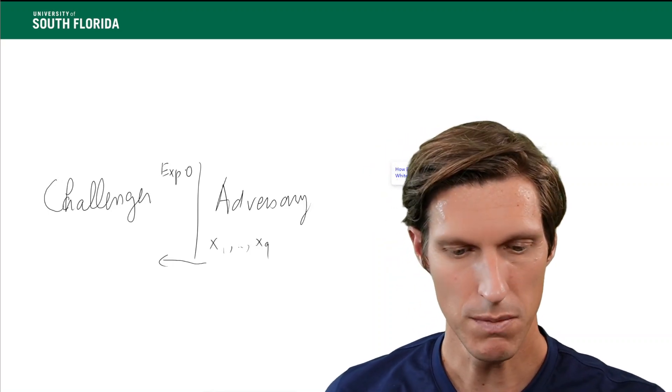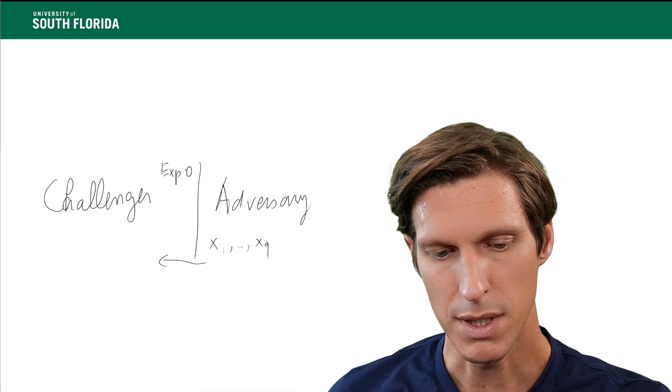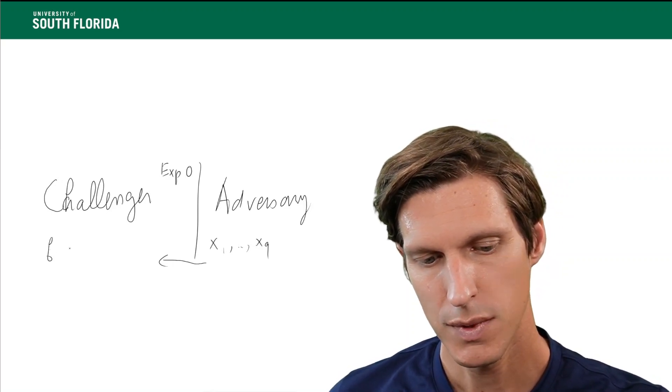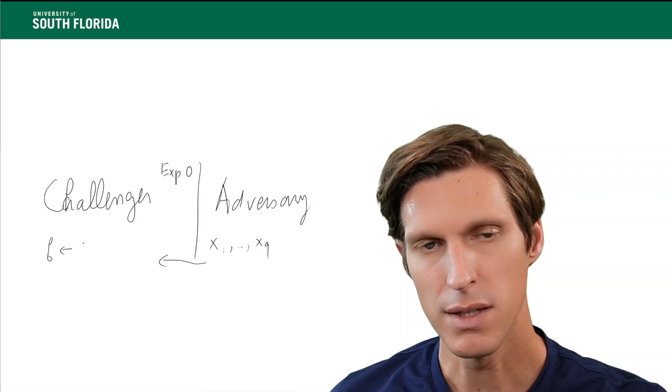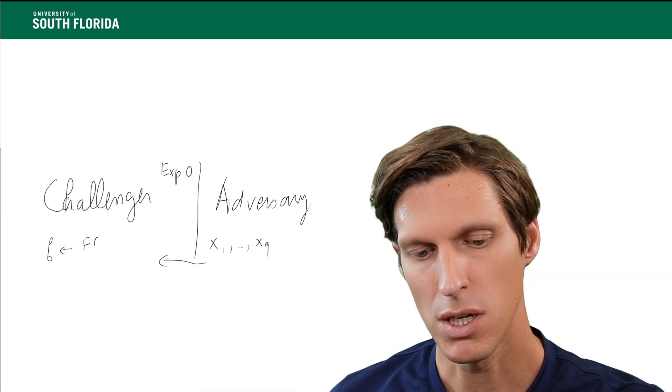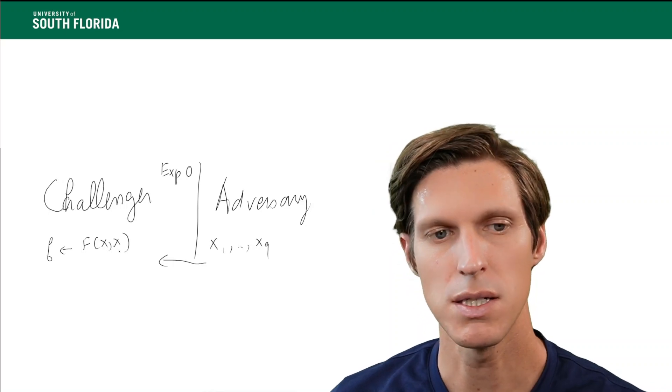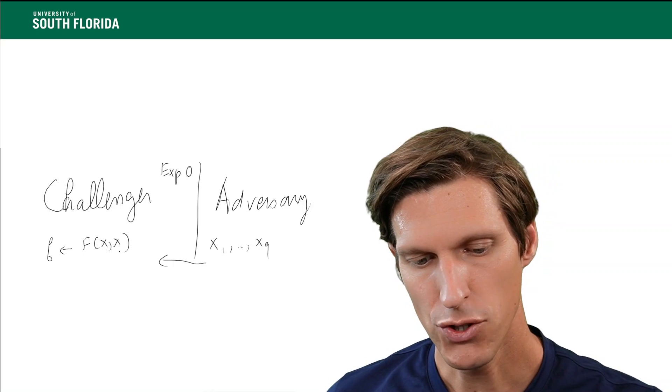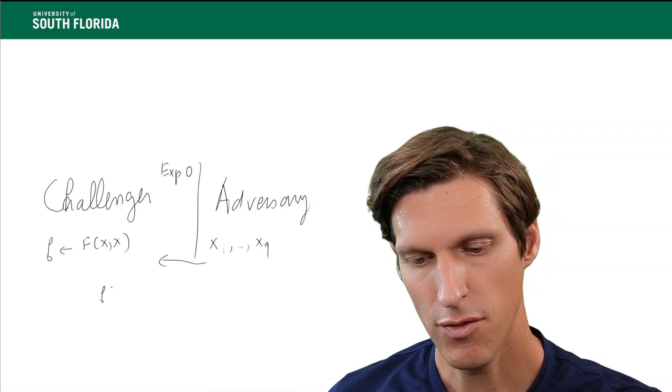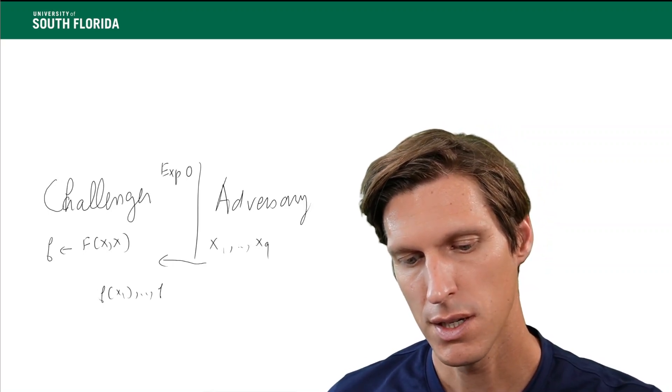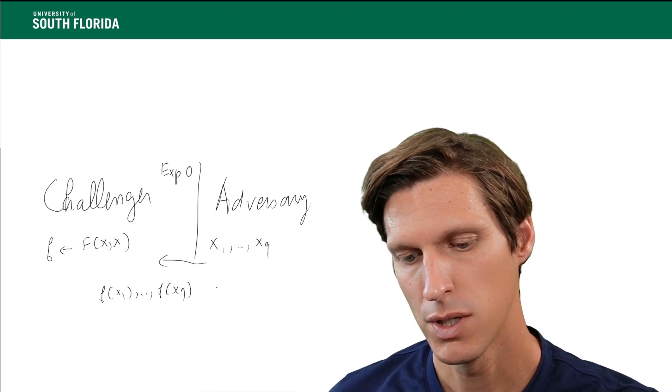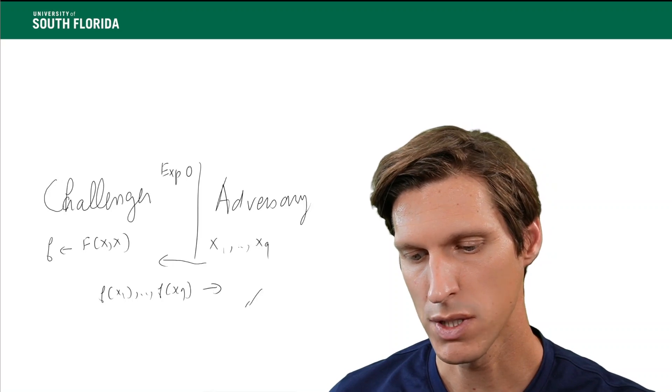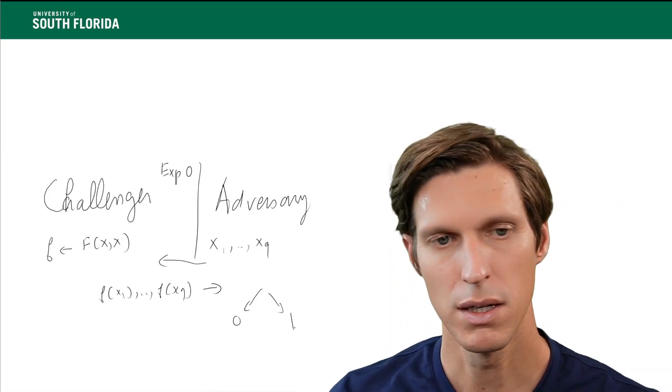In experiment 0, what will happen is the challenger will draw a function uniformly at random in the space of functions between x and x where x is the input. Then it returns f of x1 through f of xq. Then from that, the adversary decides to output either a 0 or a 1.